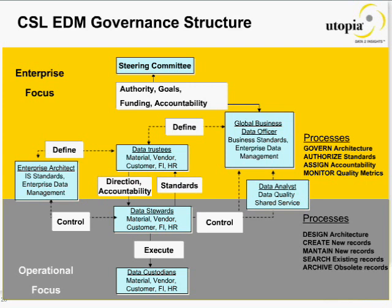You're getting stakeholders involved across the organization — some at executive level at the enterprise level — all the way down through the data custodian maintaining data in the production systems. The processes are different: at the enterprise level it's about governing architecture, authorizing standards, assigning accountability, and quality monitoring. At the operational level, in the trenches, it's about designing architecture, creating new records, validating mandatory fields, and ensuring data like tax IDs is entered correctly to avoid issues like bad invoices affecting days sales outstanding. This structure was designed to be sustainable and has been for the past four years.